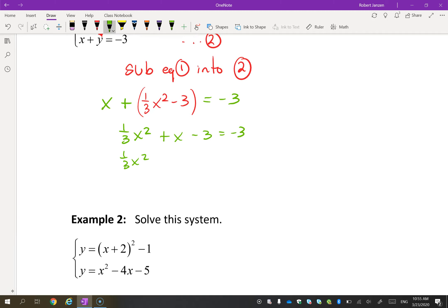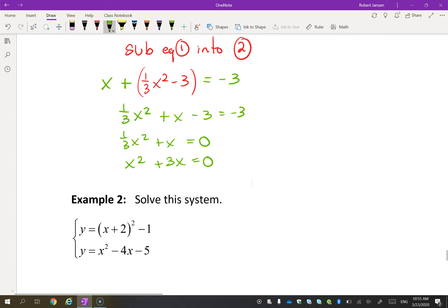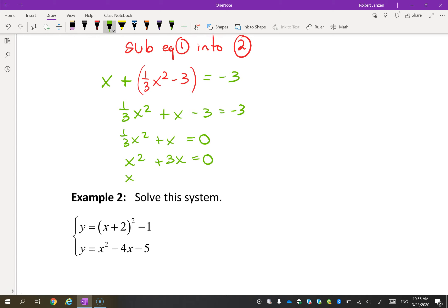So (1/3)x² + x, and if I add three, I get zero. Now what? How do I solve this? Maybe I want to get rid of the fraction. Multiply everything by three. And then how do I solve this? I can factor out an x.